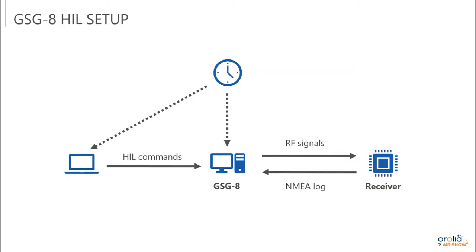This is the GSG-8 hardware in the loop setup. What I have shown here is the external computer — that's really where all your mathematical computations and models are being done. What you send over to the GSG-8 is the position, speed, velocity, acceleration — whatever information and format you have. All the work is really being done in that external trajectory processing unit.